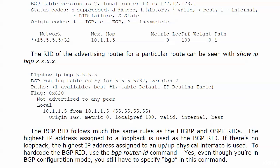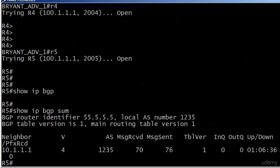The BGP Router ID follows much the same rules as the EIGRP and OSPF Router IDs. The highest IP address assigned to a loopback will be used as the BGP Router ID. If there is no loopback — which in a BGP world is going to be pretty rare — the highest IP address assigned to an up/up physical interface will be used. You can hard-code the BGP Router ID with the bgp router-id command, and to run that you must be in BGP configuration mode.